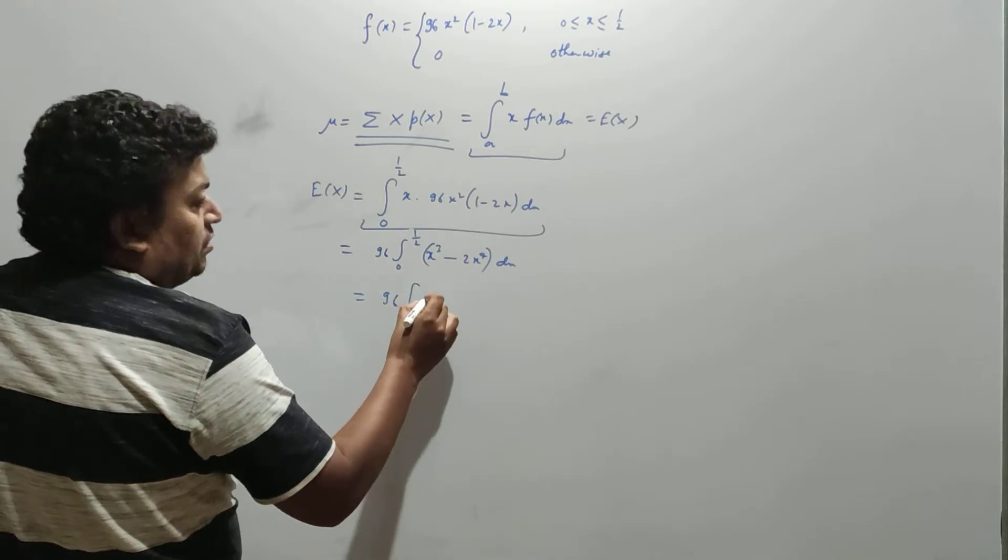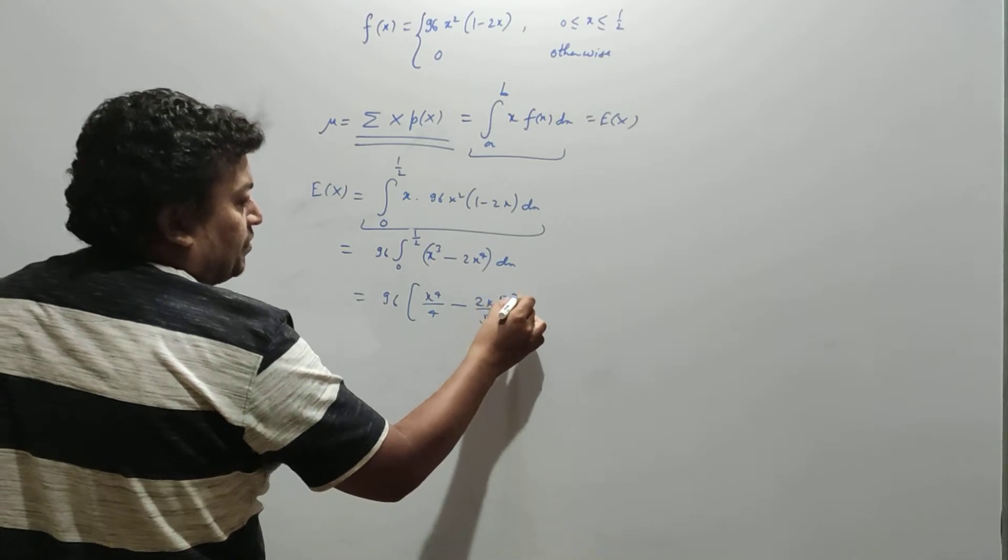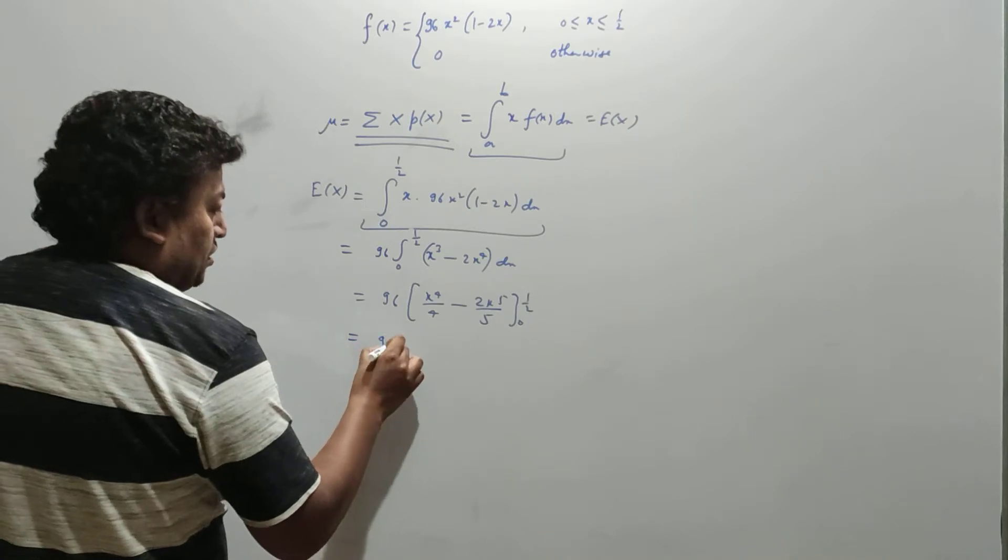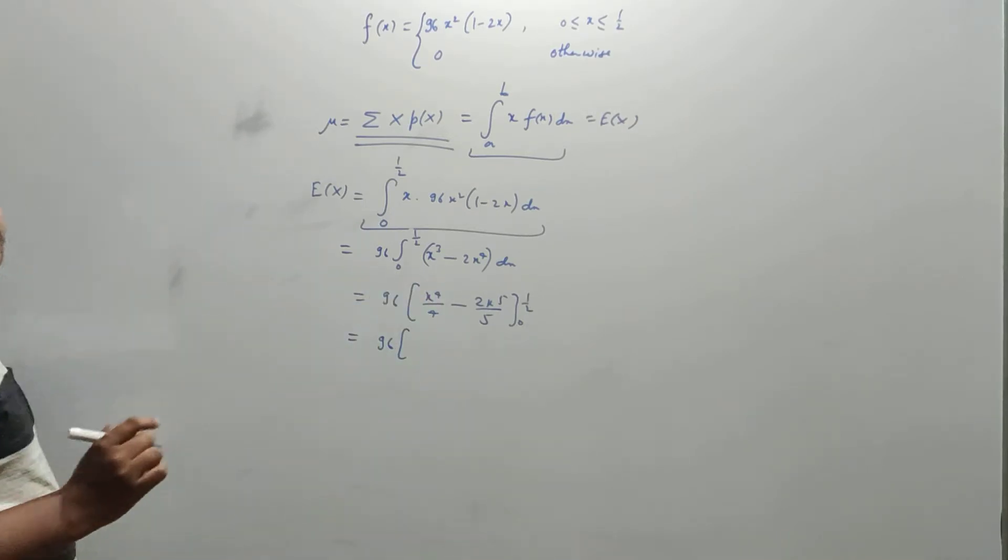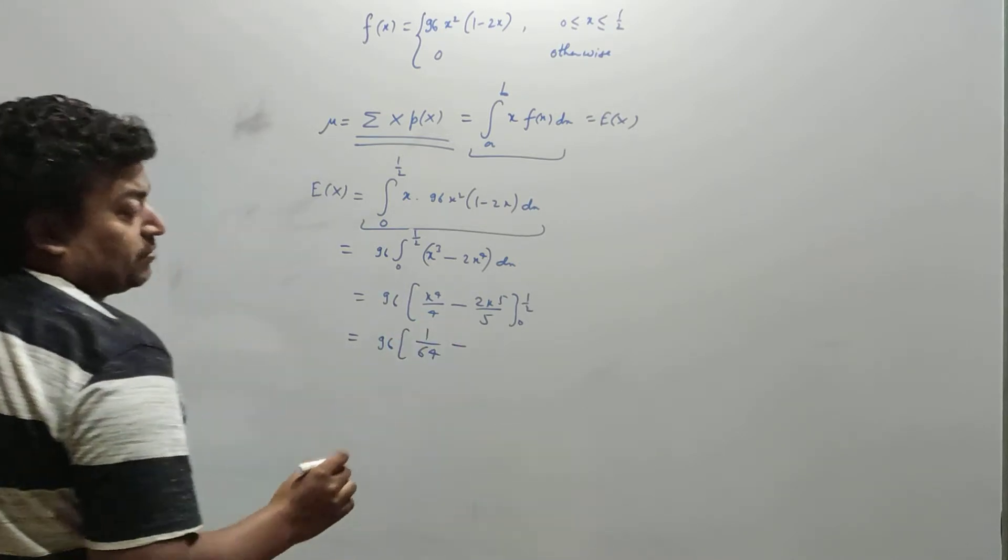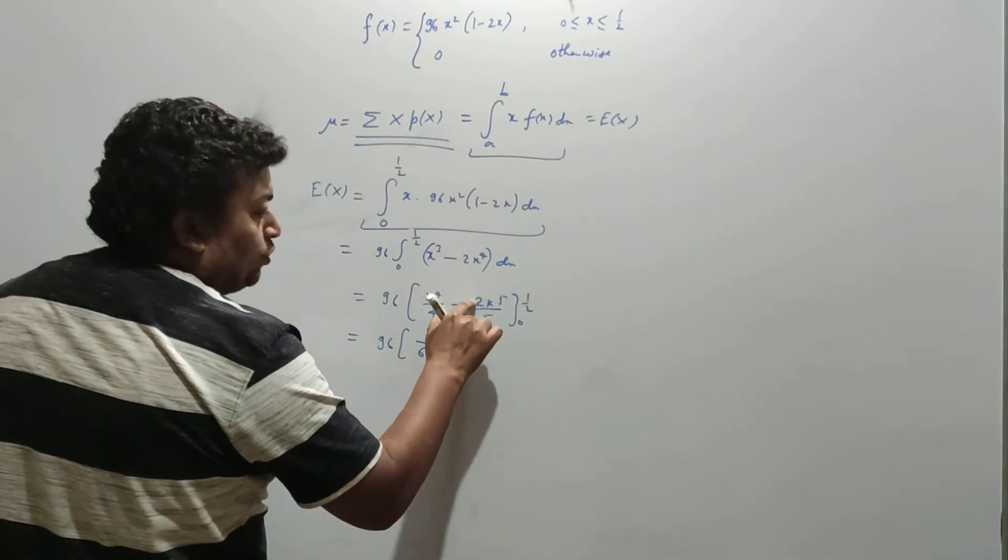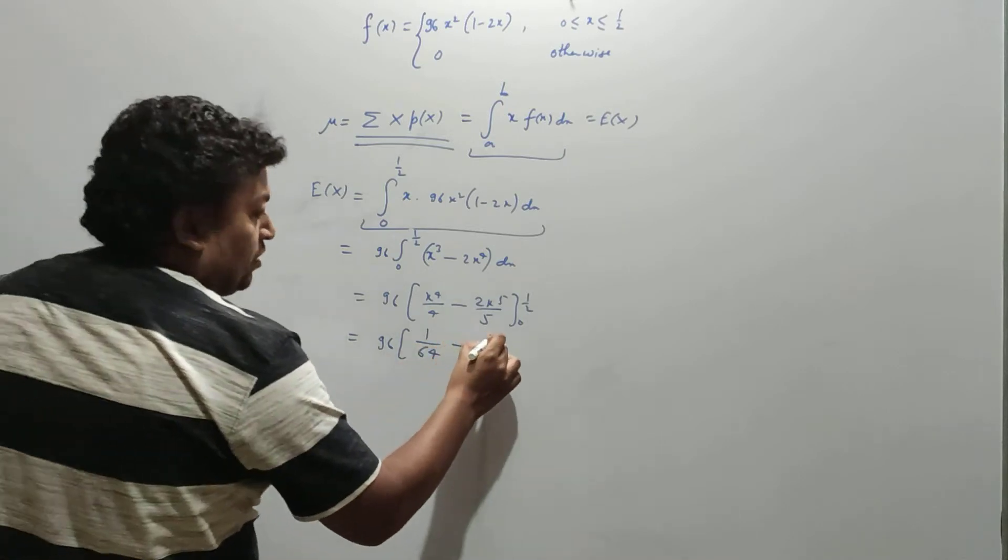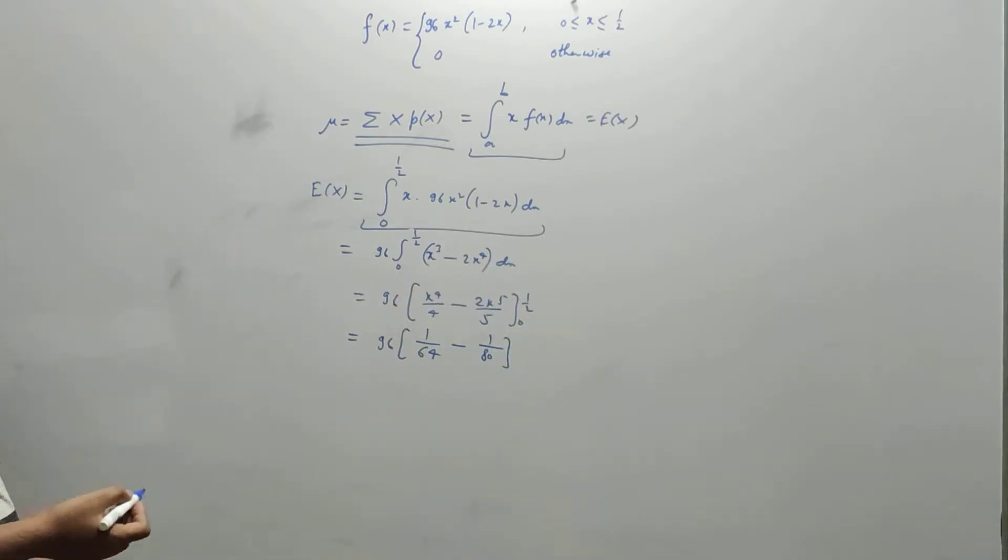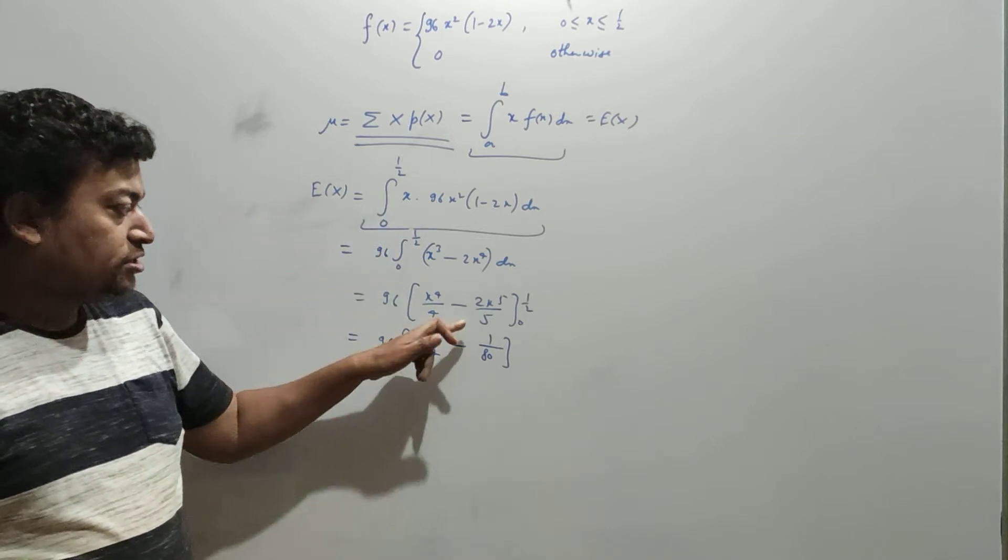So 96 times [x⁴/4 - 2x⁵/5] evaluated from 0 to 1/2. Substituting 1/2: x⁴/4 gives 1/64, and 2x⁵/5 gives 1/80. Let me check: 1/2 to the power 5 is 1/32, so 1/32 times 2 is 1/16, times 1/5 is 1/80.